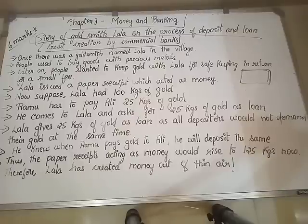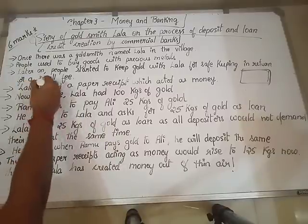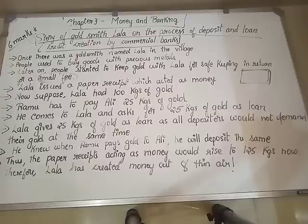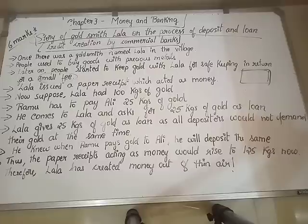Lala started issuing that paper receipt to the people — for a small fee. He was not doing it for free; he was charging a small amount as fees. So the story so far: people kept their gold with Lala for safekeeping, Lala gave them a receipt saying 'this much gold you have deposited,' and in return Lala collected a small fee from the people.